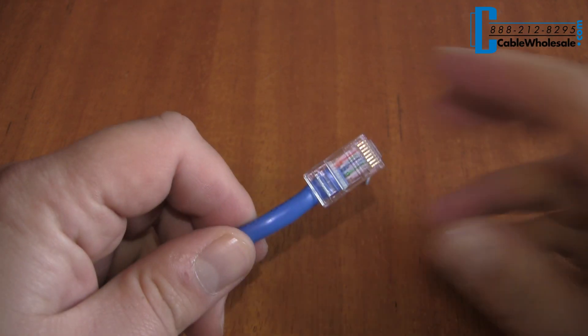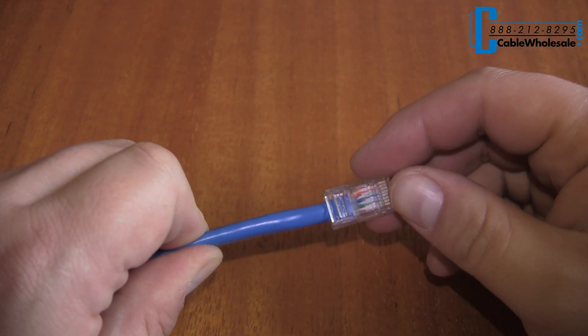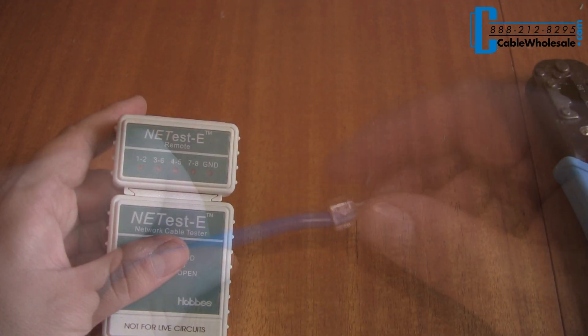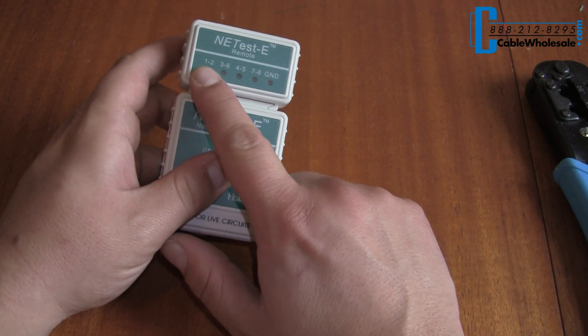And there you have it. One crimped end. Repeat the process on the other side and you have yourself a patch cable. After making your patch cable, be sure to use a network tester to make sure all the pins are attached correctly.